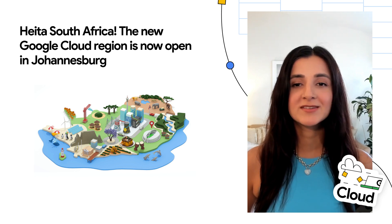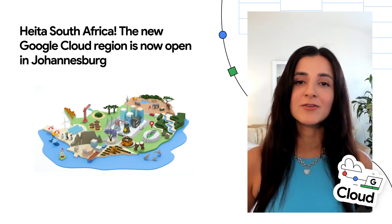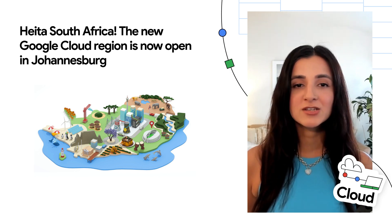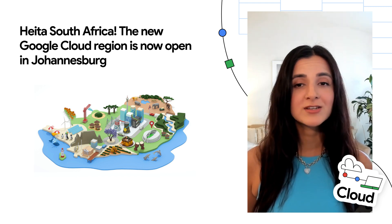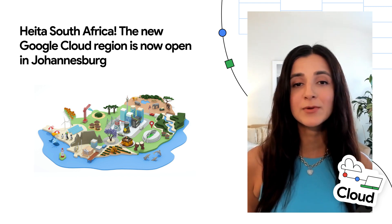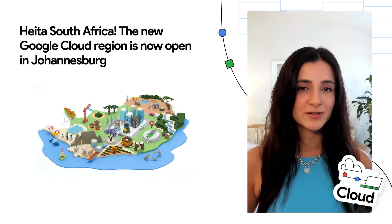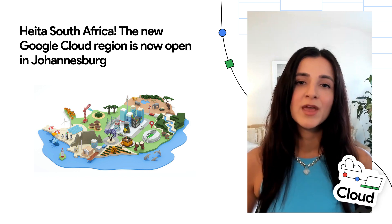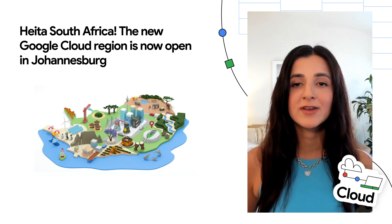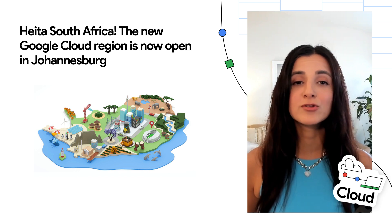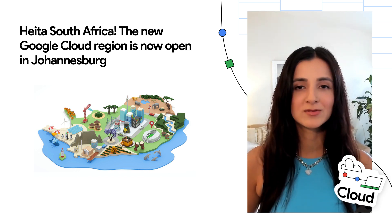A new Google Cloud region is now open in Johannesburg, South Africa. Organizations of all sizes across the continent will now have access to high-performance, secure, and low-latency cloud services. With the addition of the Johannesburg region, the Google Cloud network now totals 40 cloud regions and 121 zones.